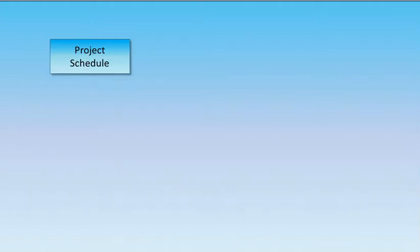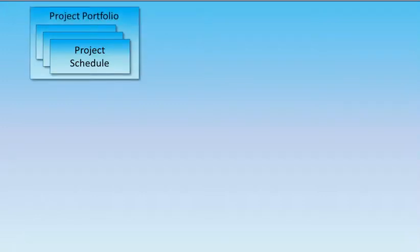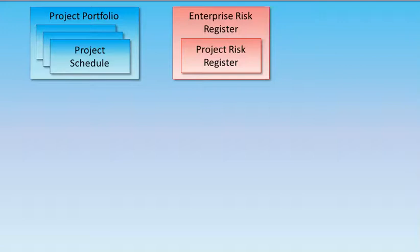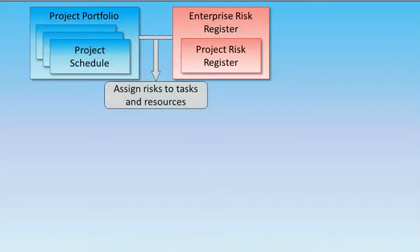In RiskyProject, risks can be managed either at the project or project portfolio level. Each project has a risk register. If you are managing more than one project, they can be part of an enterprise risk register. The project risk registers include all information about risks that could affect the project. Once risks have been identified and added to the risk registers, they can be assigned to a project's tasks or resources.